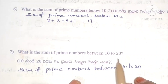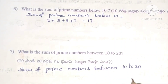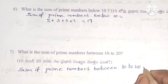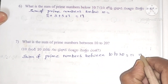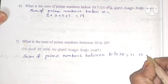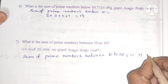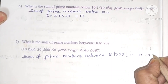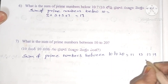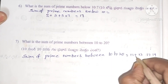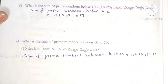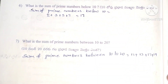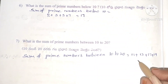Next: sum of prime numbers between 10 and 20. Prime numbers between 10 and 20 are: 11, 13, 17, 19.